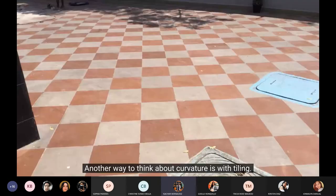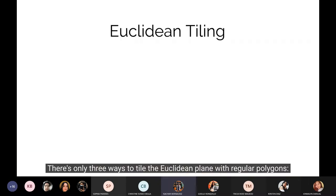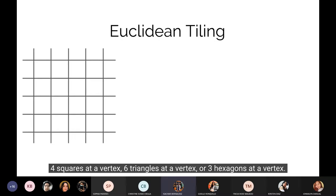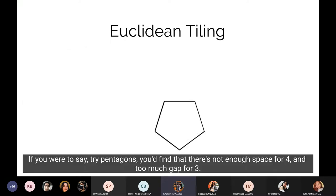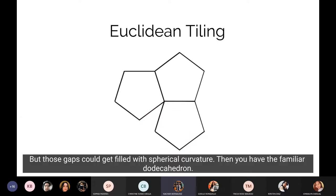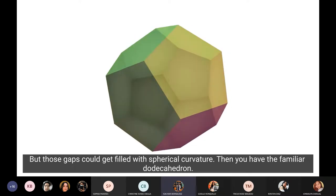So if the Earth actually had a spherical spacetime, then looking out at the horizon, the light you see would actually travel all the way around the Earth. In fact, there wouldn't be a horizon anymore. Things would be a lot weirder. Another way to think about curvature is with tiling. There's only three ways to tile the Euclidean plane with regular polygons. Four squares at a vertex, six triangles at a vertex, or three hexagons at a vertex. If you were to, say, try pentagons, you'd find that there's not enough space for four, and too much gap for three. But those gaps could get filled with spherical curvature, and you have the familiar dodecahedron.